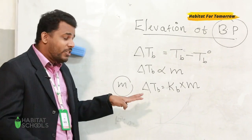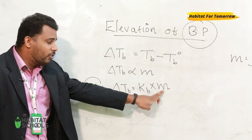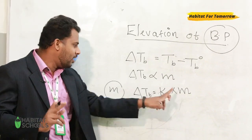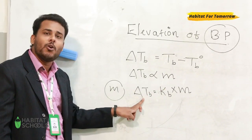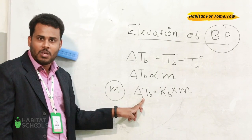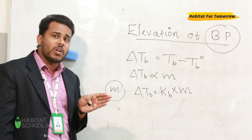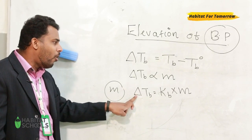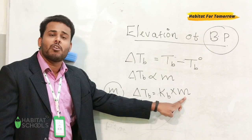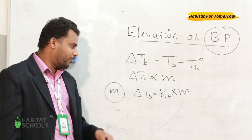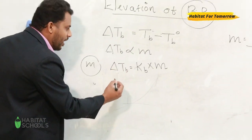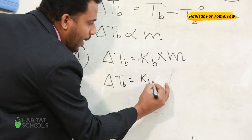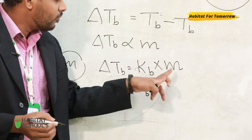If the molality is equal to unity, then Kb equals ΔTb. So the ebullioscopic constant or molal elevation constant is defined as the elevation of boiling point when the concentration of the solution is unity. Now we can expand this equation as ΔTb = Kb × m.